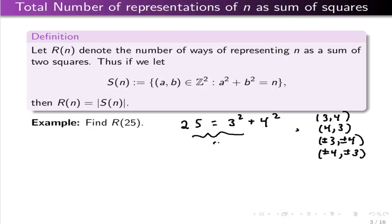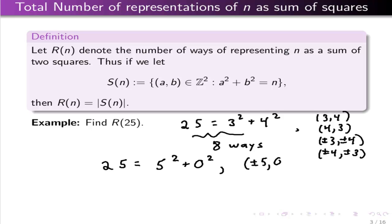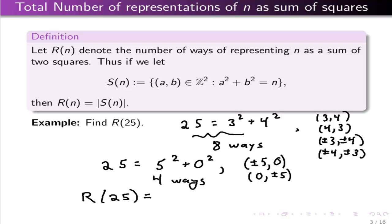The other way you can write 25 as a sum of two squares is the trivial way: 5² + 0². How many ordered pairs does that give rise to? You could have ±5 in the first position and 0, or 0 and ±5. So this way we're only getting 4 ways of doing it. And so in total, R(25) is 8 + 4 = 12.